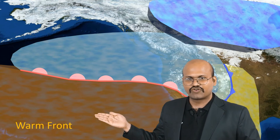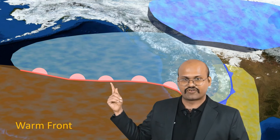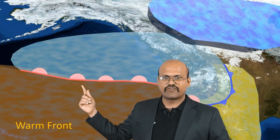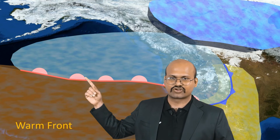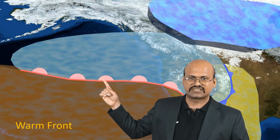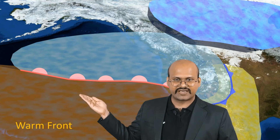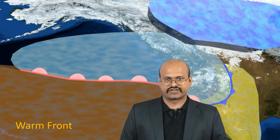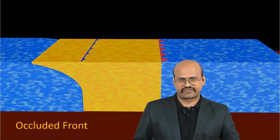Now if the warm air mass starts to move northwards, the warm air will start to replace the cooler air and we see a warm front formation. A warm front is indicated by a line with small semi-circles on it, indicating the direction of movement of the front. Because warm air is replacing cold air, we call it a warm front.